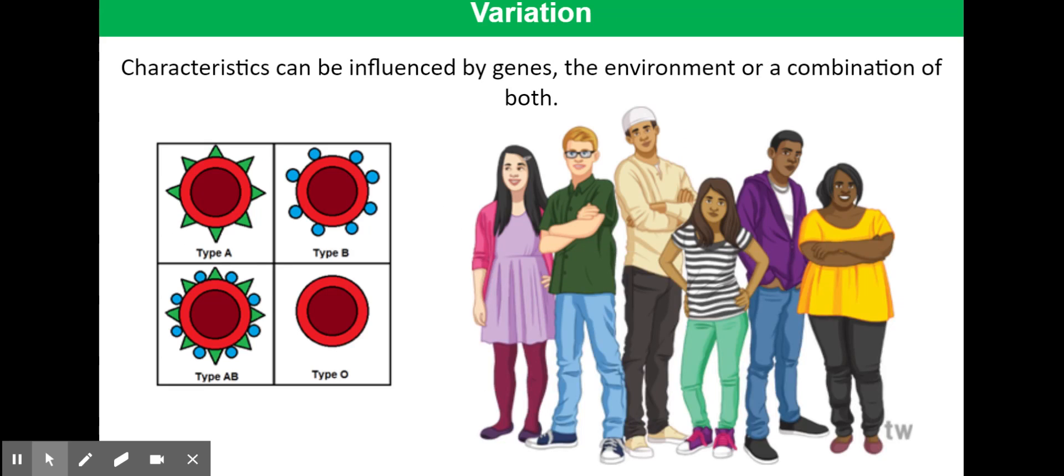Now there are some characteristics that you have that are determined by your genes, others by your environment, and some are a combination of both. So on the left hand side of the slide, you can see the four different types of blood groups we have in humans, type A, type B, type AB and type O. The blood type you have is entirely dictated by your genes. It doesn't matter if you were brought up in England or America. It doesn't matter if you are really well fed or malnourished. It doesn't matter at all what the environment is like around you and what your upbringing has been like. The type of blood you have is entirely dictated by the genes.